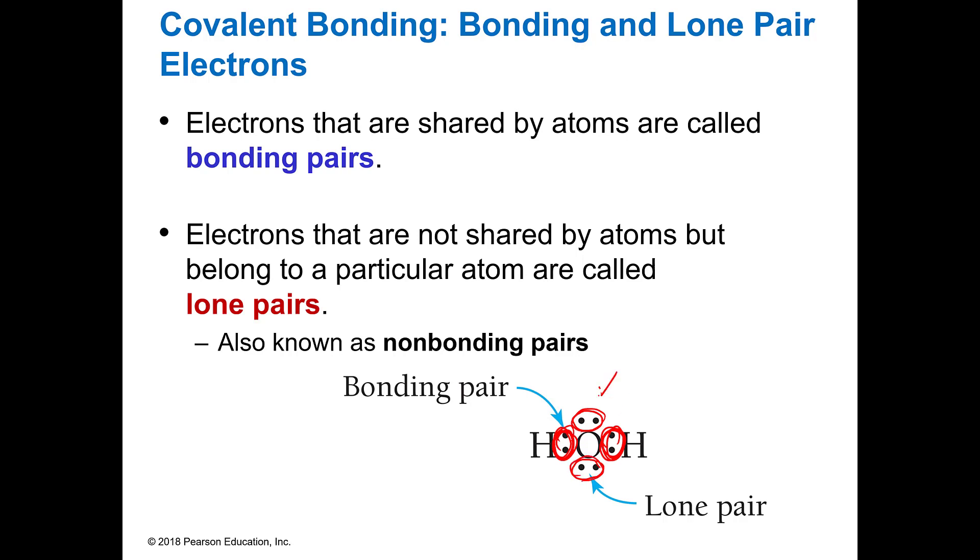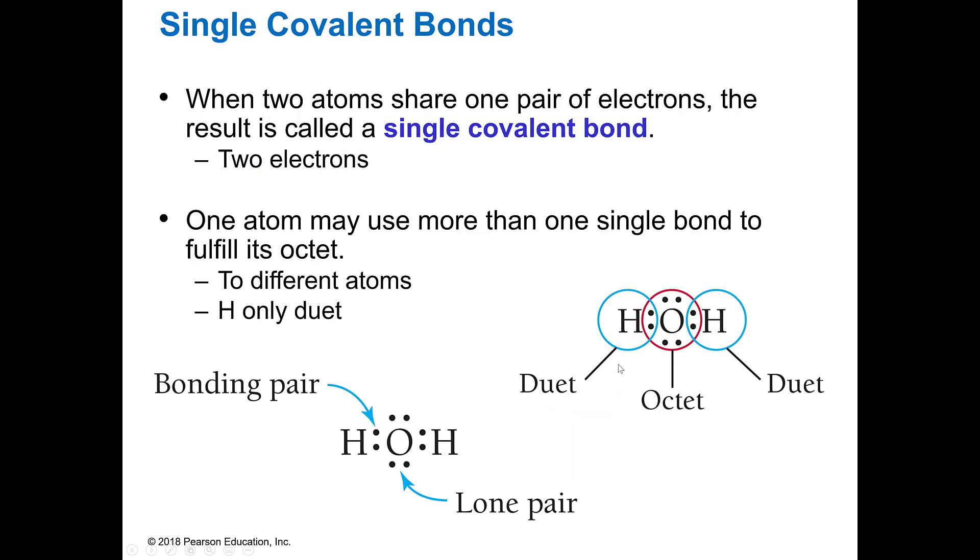We also call those lone pairs or non-bonding pairs. And so the electrons that are shared are called bonding pairs. When the two atoms share one pair of electrons, that is a single covalent bond. And you'll see us do a dash.